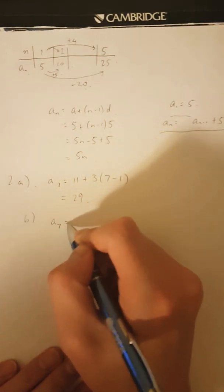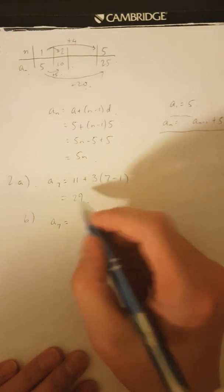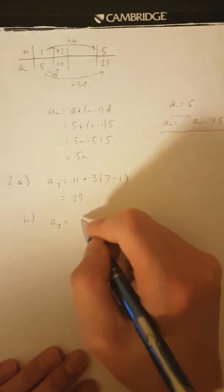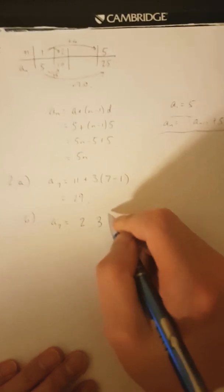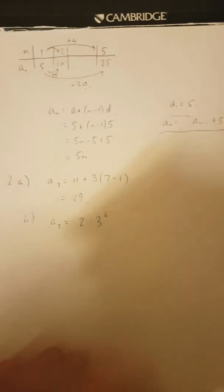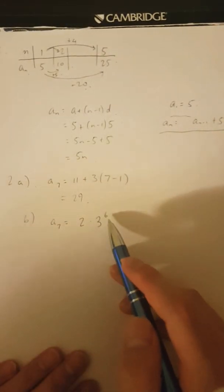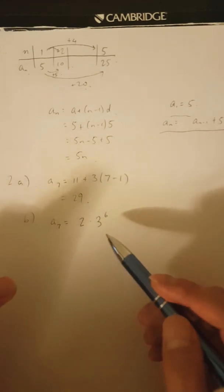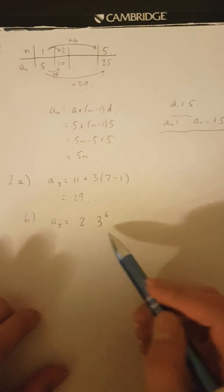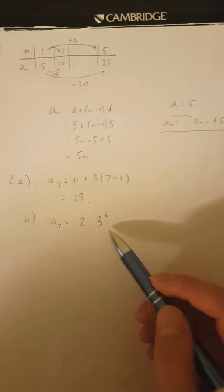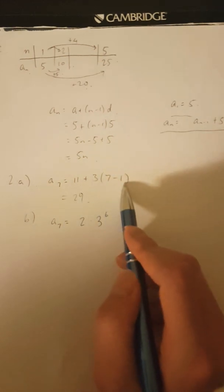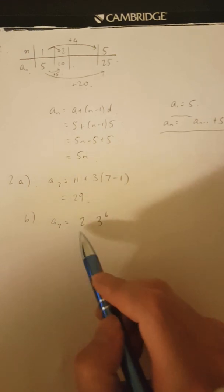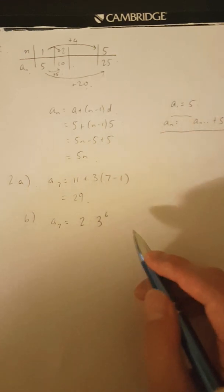Same goes for B. A_7 is just substituting N equals seven: two times three to the power of seven minus one, which is three to the six. Three to the six is going to be a big number. So in the exam, if the number turns out to be way too big, you can just leave it in this form and you'll get full credit. But if you want to calculate it explicitly — three to the six is 729 — so it's going to be 1458.